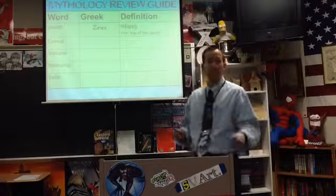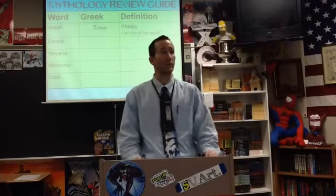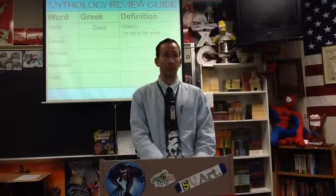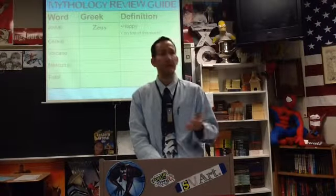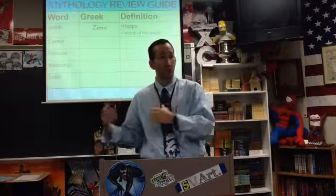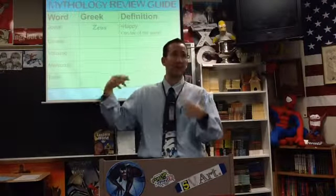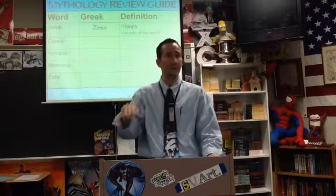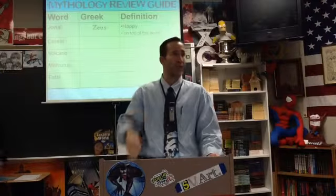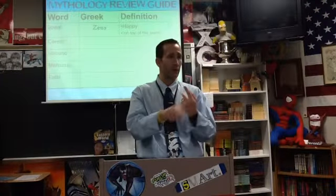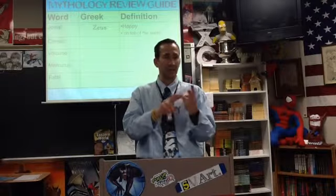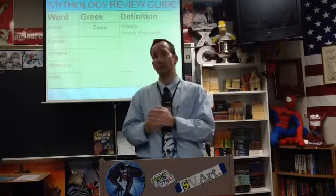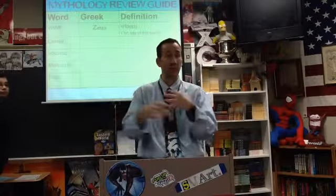Zeus also has another Roman name: Jupiter. You should recognize that word — it's a planet. All of the planets come from Roman mythology. If you go through and look at all the Roman names for the different gods, you're going to recognize a whole bunch of planets — Mars, Uranus, Mercury, Pluto. They all come from the gods. Mars is red, so they named it after the god of war because they thought it was covered in blood. Mercury, the planet that goes really fast around the sun, was named after Hermes, the god that runs really fast.